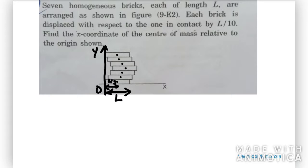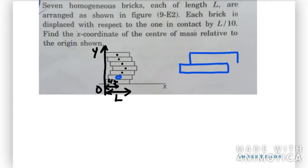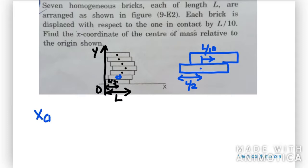And they said that each brick has been displaced by L/10. So the distance between brick 1 and brick 2 has been displaced by L/10. Let me make a bigger figure to make you understand better. So the length for each brick is L, that means half-length will be L/2, and each brick has been displaced by L/10. So let us write the x-coordinate of the center of mass.